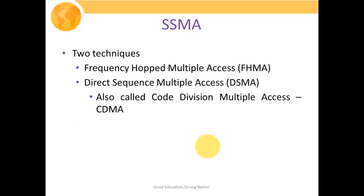The two types are: frequency hopping multiple access, and direct sequence multiple access, which is also called DSMA. Direct sequence multiple access techniques are also called code division multiple access, or we could say that CDMA is an example of direct sequence multiple access.